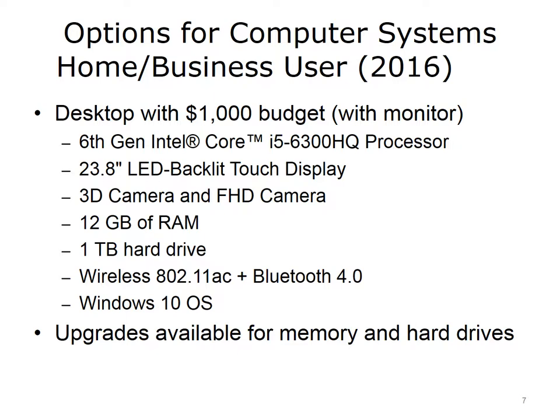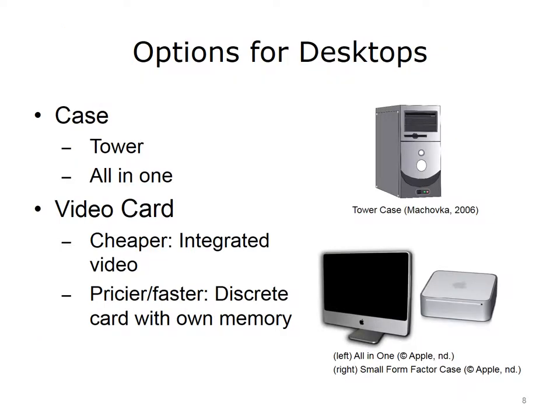6th generation Intel Core i5-6300HQ processor, 23.8-inch LED backlit touch display, 3D camera, 12 gigabytes of RAM, 1 terabyte hard drive, Wireless 802.11ac, and Bluetooth 4.0, Windows 10 operating system. Upgrades are usually available for memory and hard drives. A tower is a good option if you need a lot of processing power for video editing or online gaming.